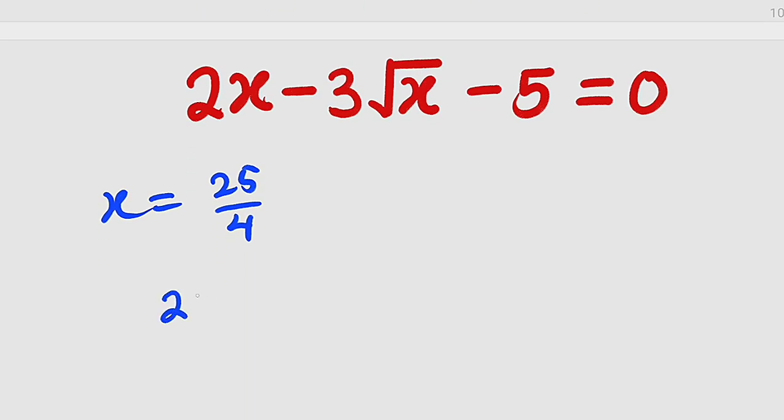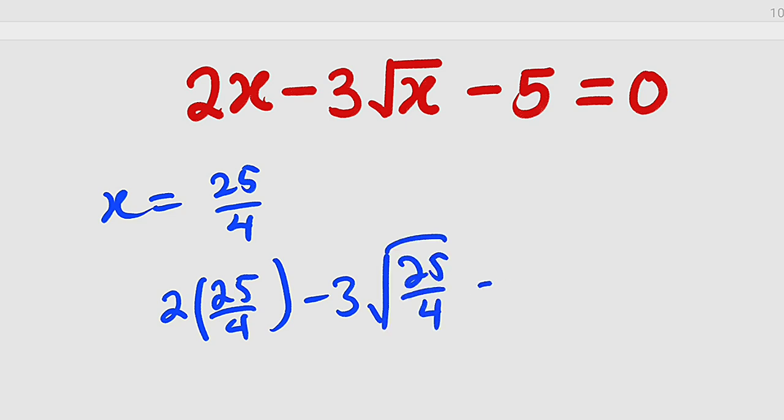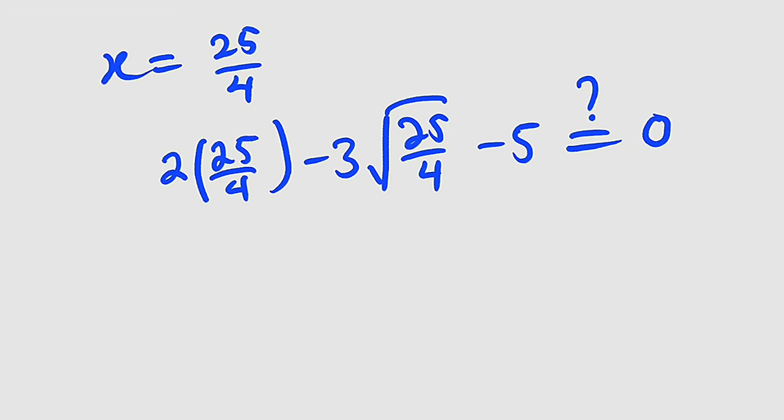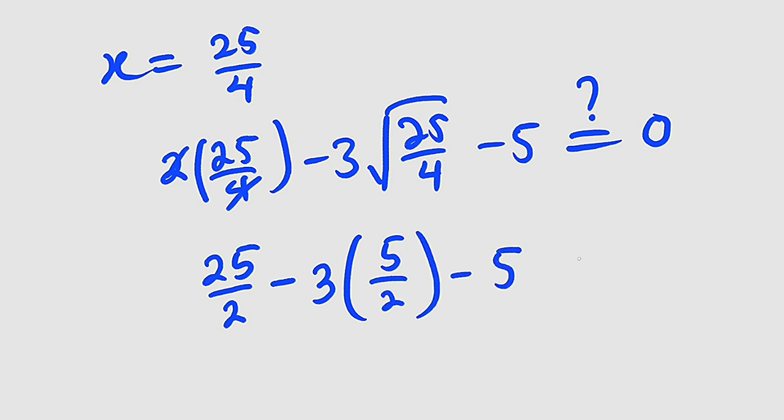So we have 2 multiplied by 25 divided by 4 minus 3 multiplied by the square root of 25 divided by 4 minus 5. Will this give us 0? That's the question. 2 can go into 4 exactly 2 times. So we have 25 divided by 2 minus 3 multiplied by, the square root of 25 is 5 and the square root of 4 is 2, then minus 5. The whole of this equal to 0?